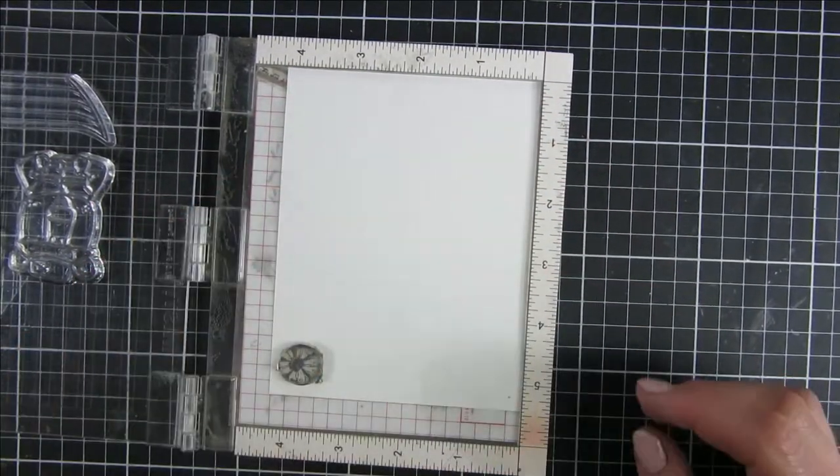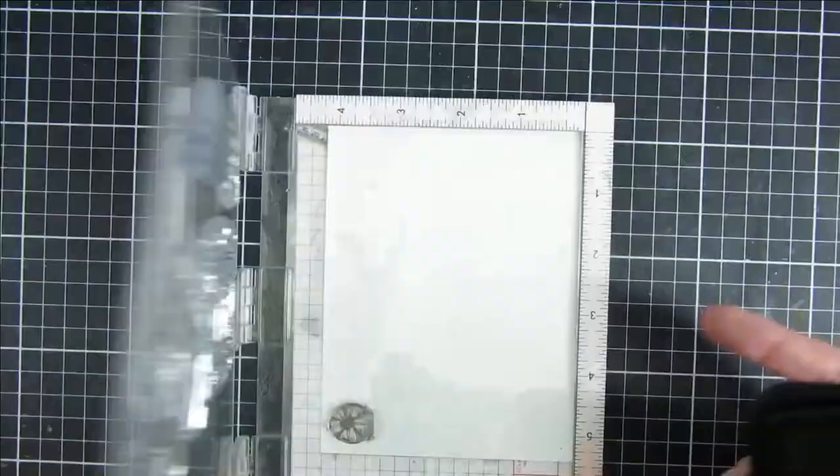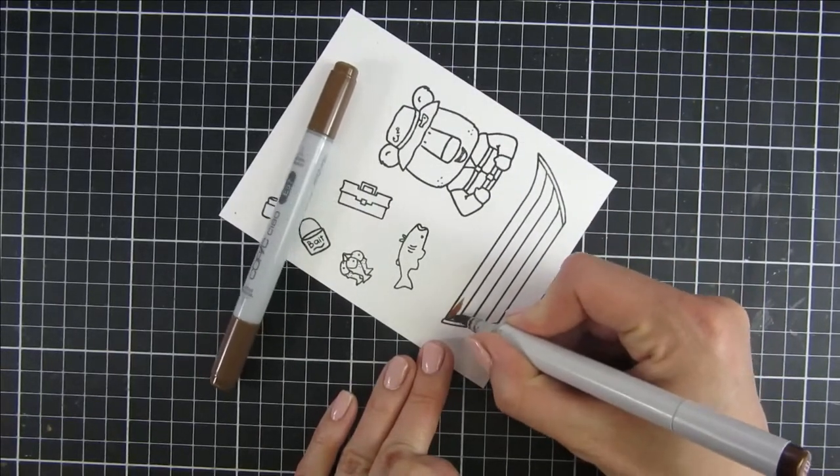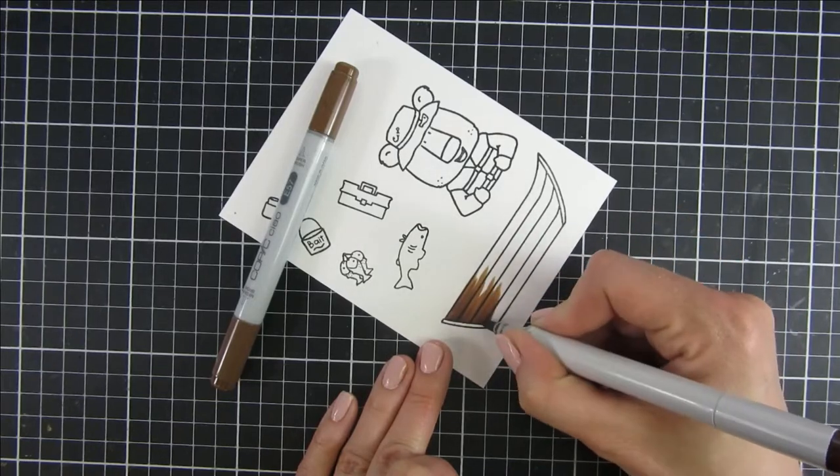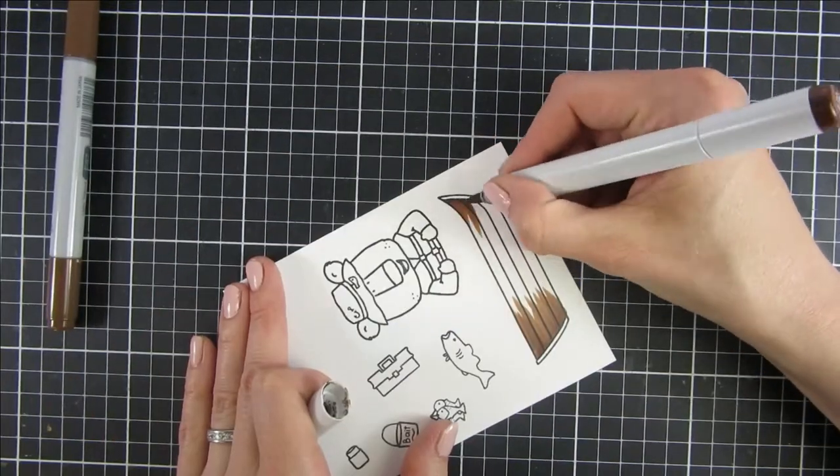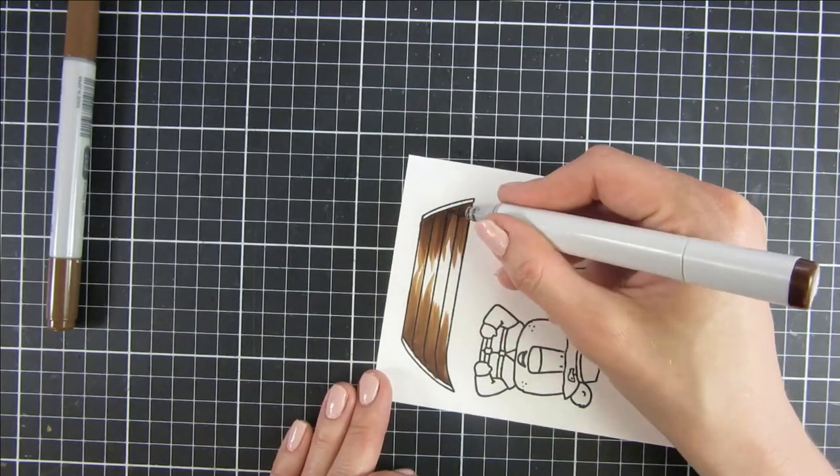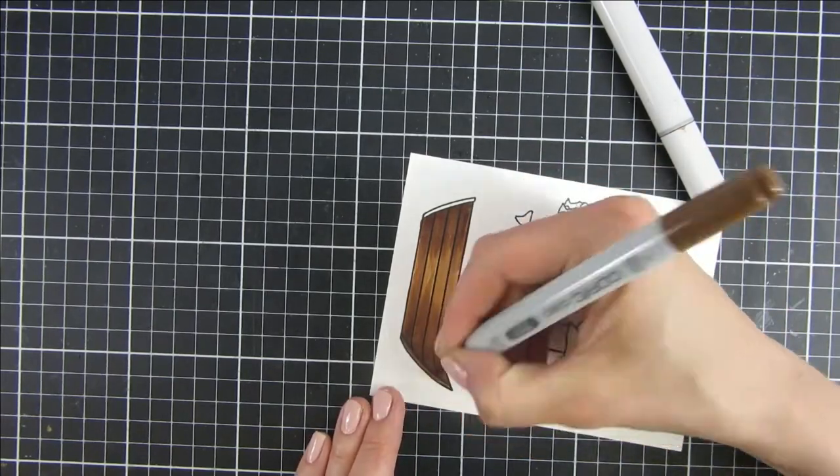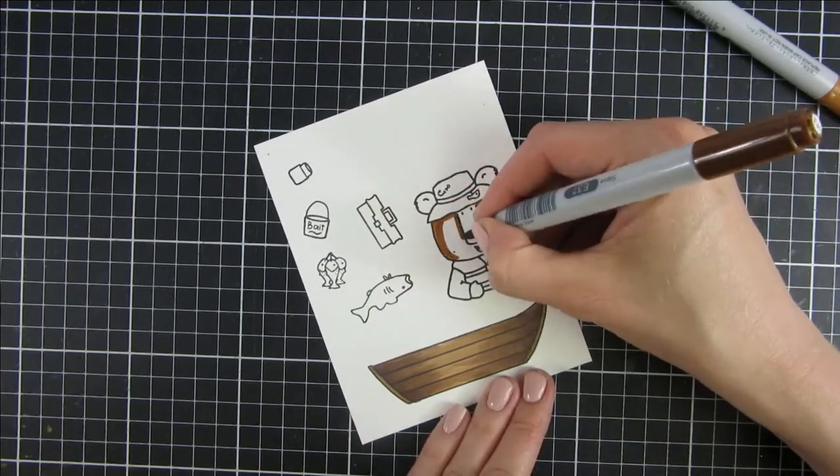I will feature products from both companies and create a really fun interactive card using the mini double slider die from Heffy Doodle. From Trinity Stamps you can see I already stamped out and started coloring one of the new stamps called Cozy Bear Boater from the June release. I thought it would be really fun if the bear was fishing and caught one of the fish and that would pop up.